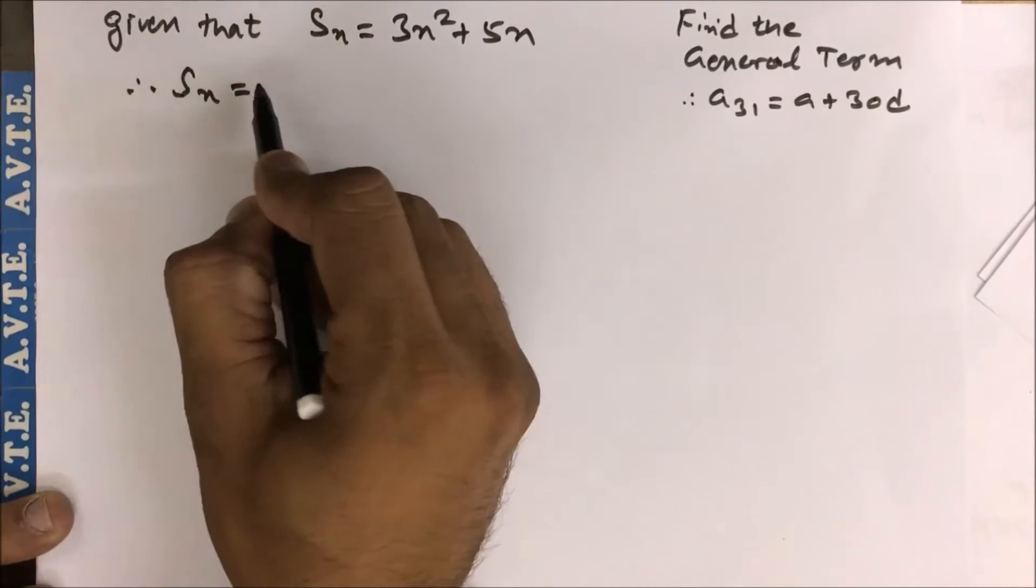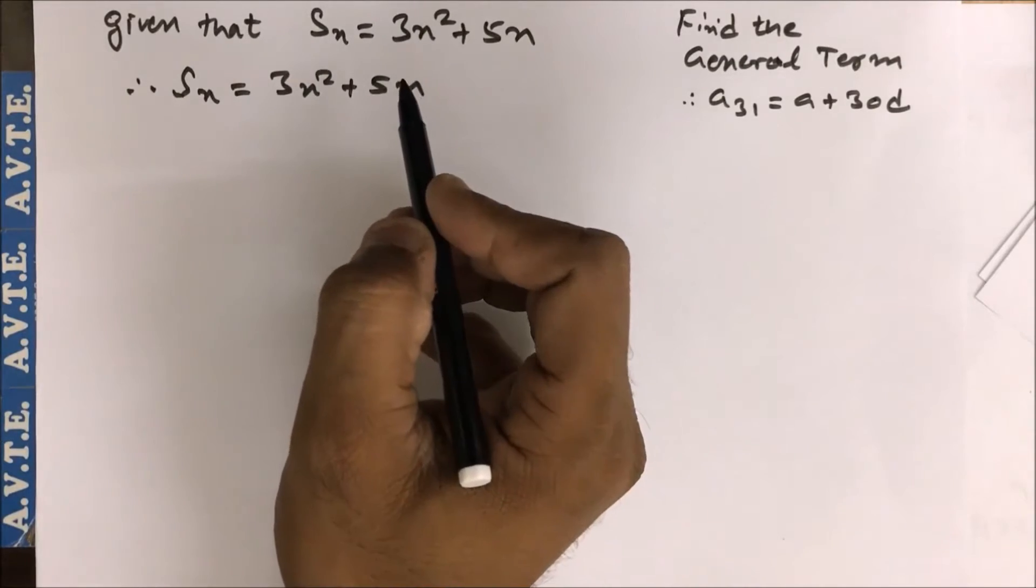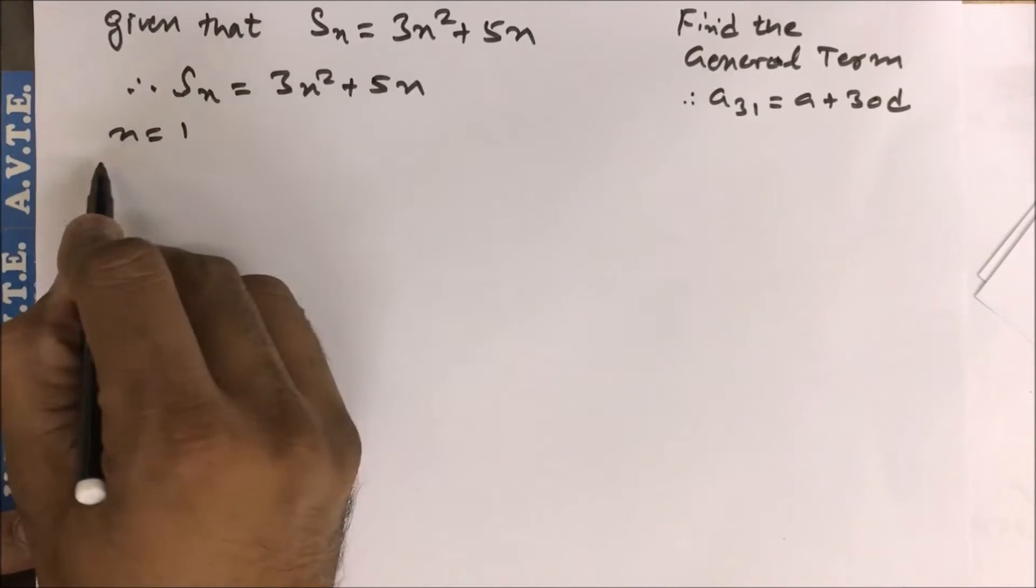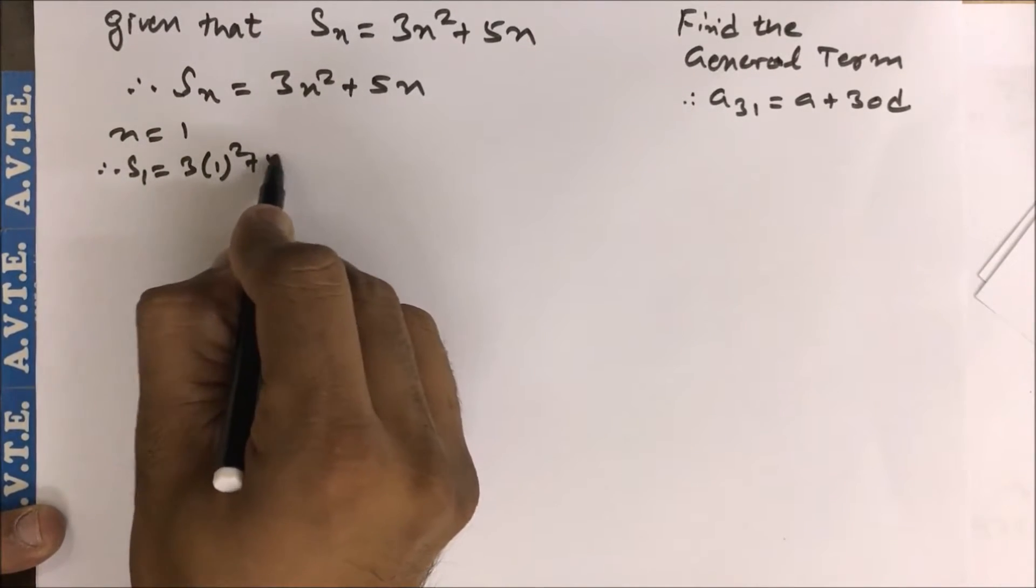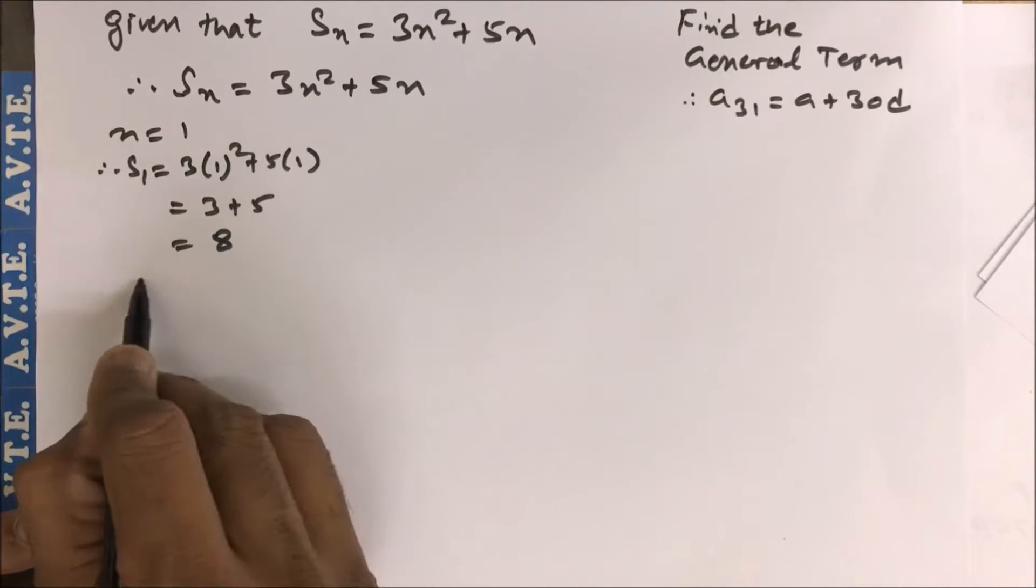You have Sn is equal to 3n square plus 5n. It means first you have to find a₁. You put n as 1, so S₁ is 3 times 1 squared plus 5 into 1, that is 3 plus 5, that is 8.